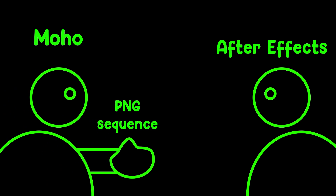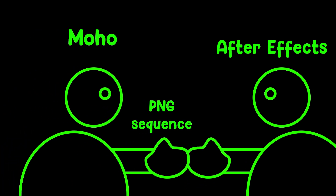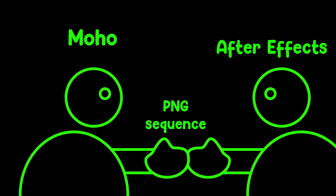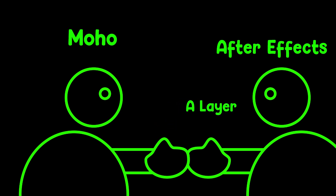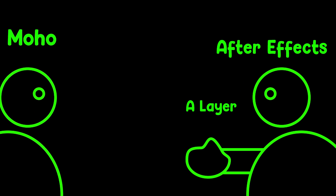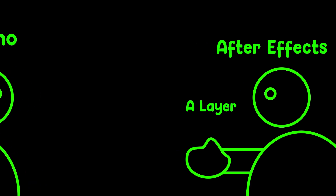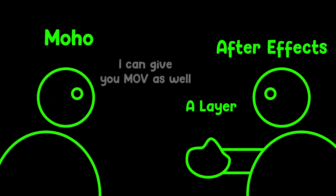Adobe After Effects doesn't need to convert them into a video. You simply can import your PNG sequence as one single layer, just like a video layer, into your Adobe After Effects project. So based on this explanation, you now know that exporting these layers as PNG sequence should do the trick.